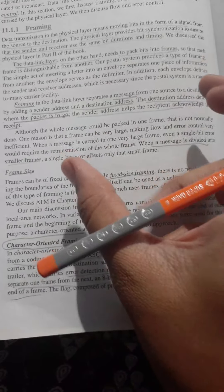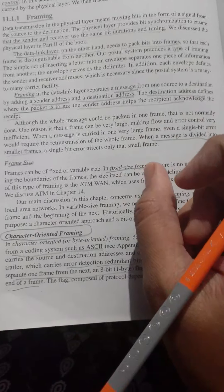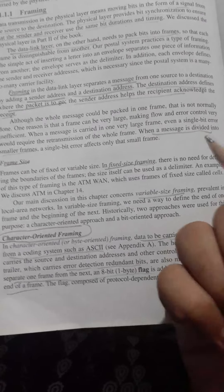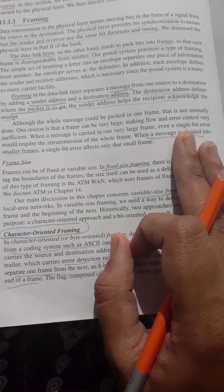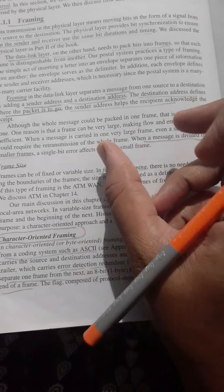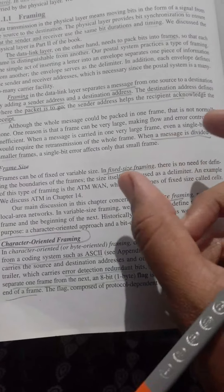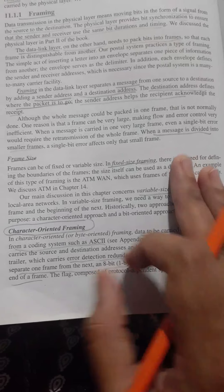A message in the data link layer can be too lengthy to pack into one single frame. Handling a single large frame would be difficult because of flow and error control mechanisms. Because of that, the total message is divided into a number of smaller frames.